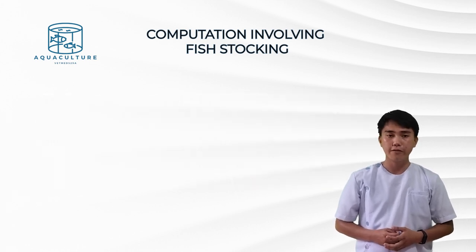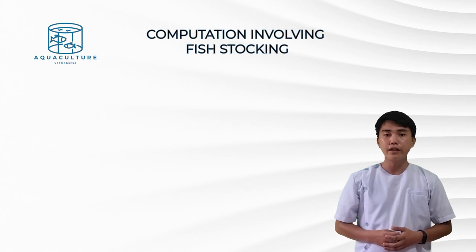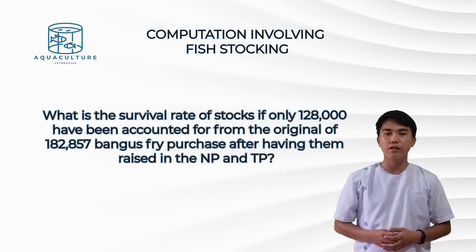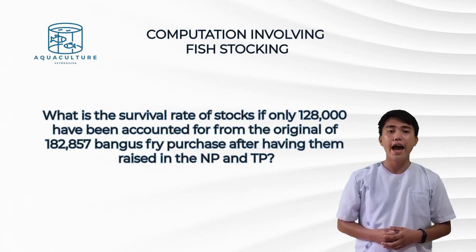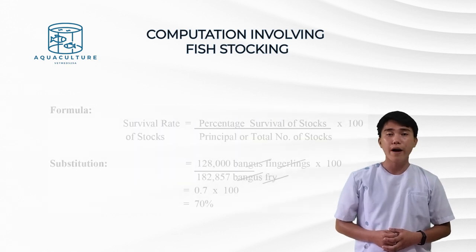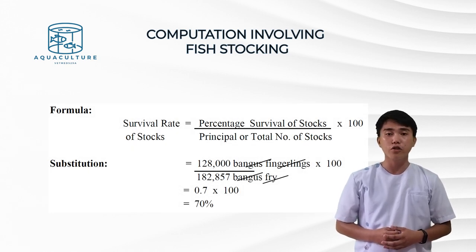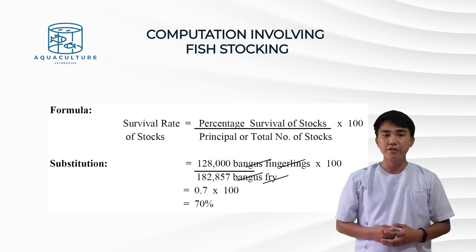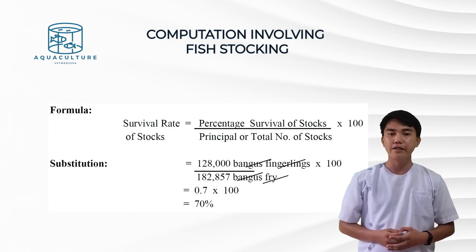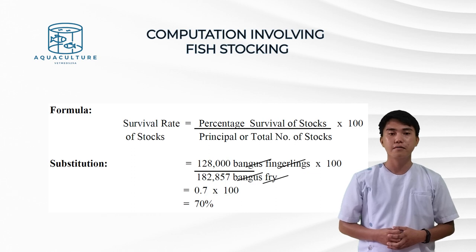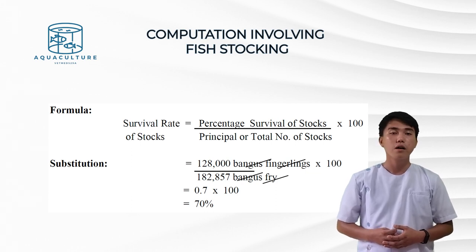Lastly, we calculate the survival rate of stocks. What is the survival rate if only 128,000 have been accounted for from the original 182,857 bangus fry purchase after rearing in the NP and PP? Formula: survival rate equals percentage survival of stocks over principal or total number of stocks times 100. Substituting: 128,000 over 182,857 times 100 equals 0.7 times 100, which is 70%.